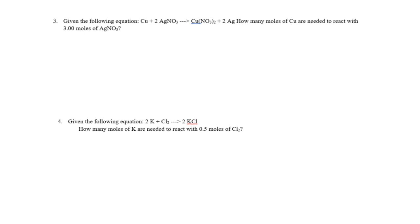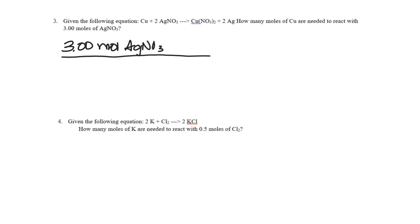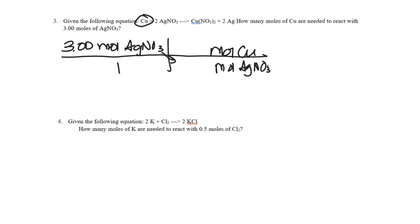Question three: copper plus silver nitrate yields copper nitrate plus silver. We want to know how many moles of copper are needed to react with three moles of silver nitrate. Set up train tracks: three moles of silver nitrate over one. Moles of silver nitrate comes down; moles of copper goes to the top. In the balanced equation, there's a one next to copper and a two next to silver nitrate. Cancel units — the answer is 1.5 moles of copper.